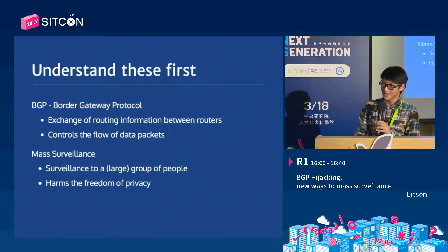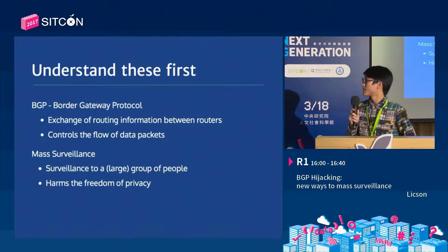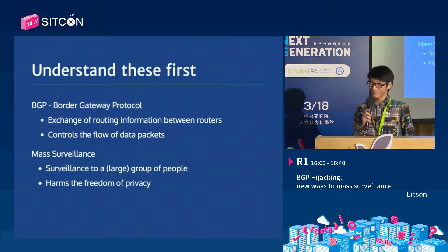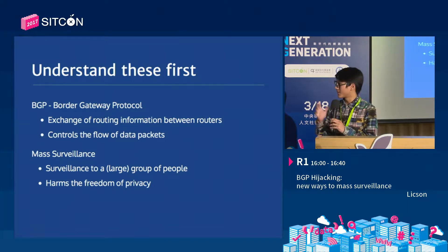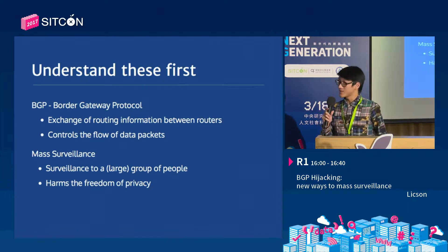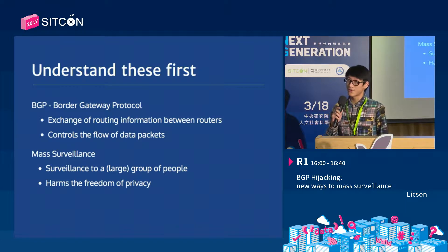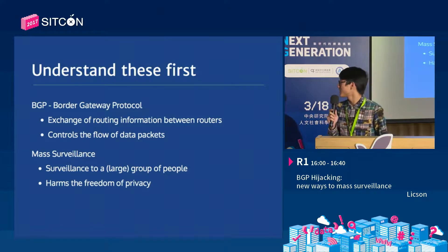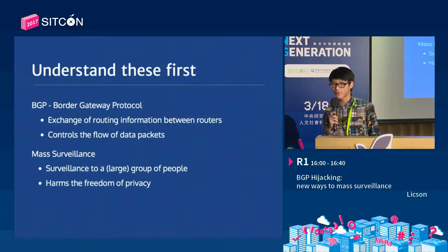BGP is a way for routers to communicate. And mass surveillance means surveillance of a large group of people, like on a country scale - for example, like the USA's PRISM project - and it harms the freedom of privacy.